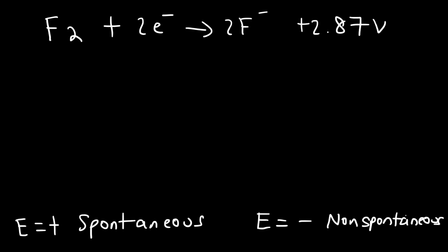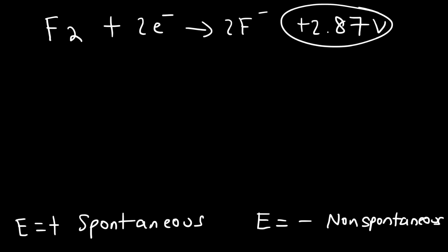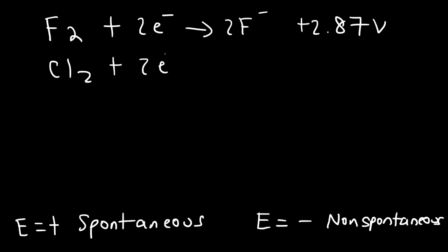This tells us that fluorine, a nonmetal, has a strong desire for electrons. We know that to be true because fluorine is the most electronegative element in the periodic table, and that's why it has such a very high cell potential. Another example is chlorine — chlorine also wants to acquire electrons.